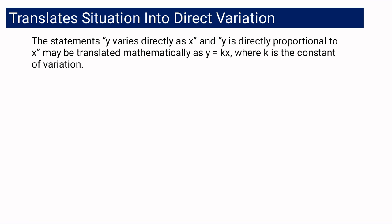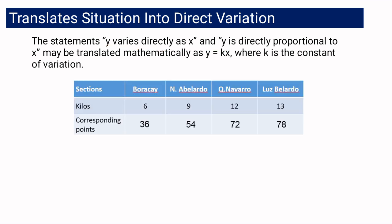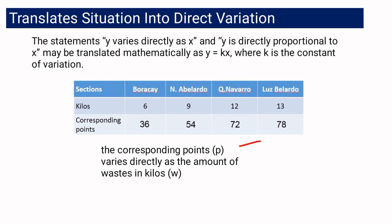Let us proceed to translating a situation into direct variation. The statement 'y varies directly as x' or 'y is directly proportional to x' may be translated mathematically as y equals kx, where k is the constant of variation. Considering our situation with kilos and corresponding points, we can say that the corresponding points vary directly as the amount of waste in kilos. If we translate that into a mathematical equation, it will be written as p equals kw.